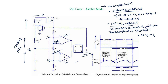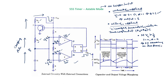If Vc is slightly more than 1/3 Vcc, what happens to the comparator outputs? For the upper comparator, the positive terminal voltage is less than the negative terminal voltage (2/3 Vcc), so the output is 0. For the lower comparator, the negative terminal voltage is greater than the positive terminal, so that output is also 0. With S = R = 0, the flip-flop remains in its previous state, meaning Q = 1 and output remains 1.